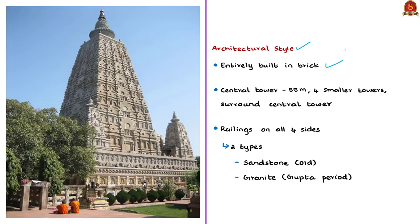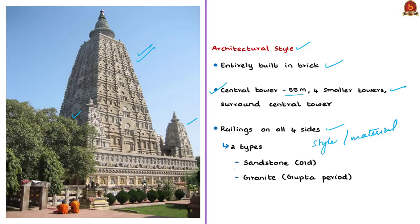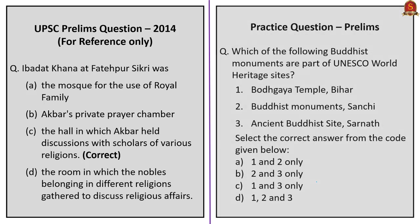With respect to architectural style, the Mahabodhi Temple's central tower rises to 55 meters and four small towers are constructed in the same style surrounding the central tower. The railings surrounding the temple on all four sides are about 2 meters high and reveal two distinct types — both in style and materials. The older ones are made of sandstone and the new ones are constructed from unpolished coarse granite, dated to the Gupta period. These are the key facts about the Mahabodhi Temple complex. With this we come to the end of this discussion. The practice question will be discussed in the last session.